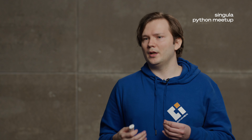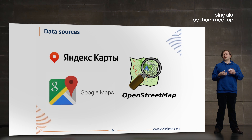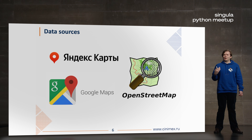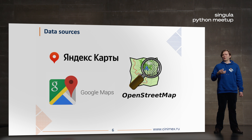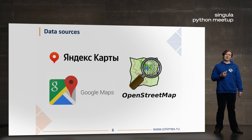How to get geodata? There are a lot of different services which provide geodata — for example, Google Maps or Yandex Maps, which can provide different sorts of geodata. But if you want an open-source solution, OpenStreetMap is the best one. You can also find different types of geodata on Kaggle, but if you want a stable and reliable solution, OpenStreetMap is pretty good for such tasks.